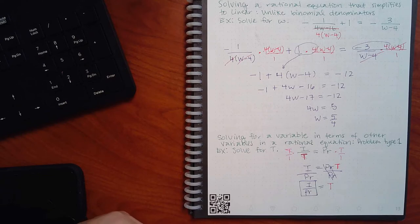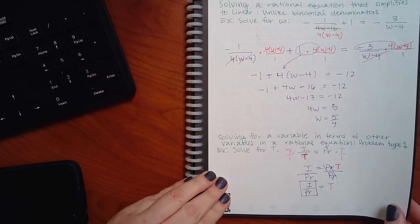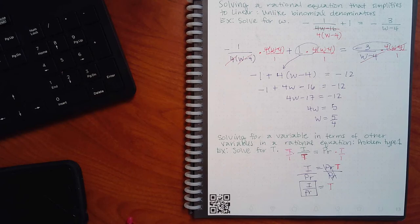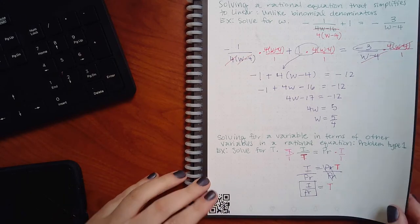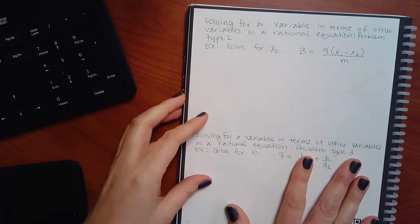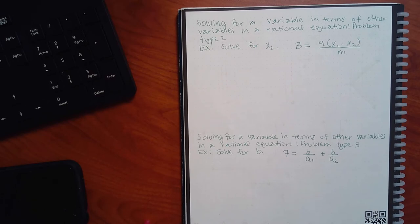So what does I over pr represent? I is interest, p is principal, r is rate, t is time — so this is the simple interest formula. You're going to see these variables again in college algebra. Not all problems have this kind of meaning though; some of them are just random letters they give you and you just solve for whatever letter they tell you.